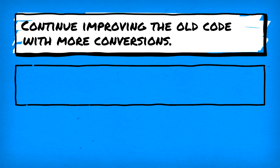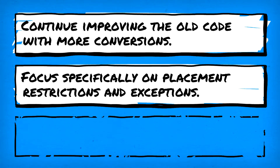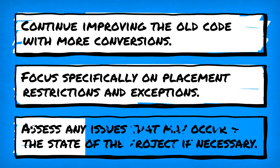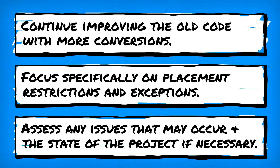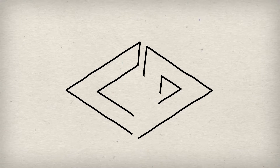So today we continue those conversion efforts to further improve the game's code. We'll be focusing on specific restrictions and any exceptions that have to be made for said restrictions. We'll do this through some new scripts, more added code, and a whole lot of hope that nothing breaks along the way. But if something does break, we'll assess the state of the break and the overall project to see what can be done about it in the future. Sounds ominous enough, so let's get to the coding.